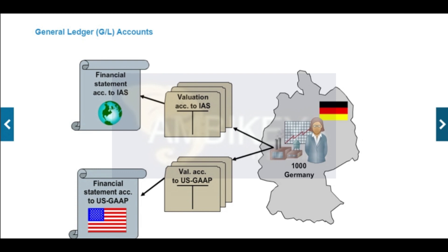The accounts approach is widely used in this context. Different valuation approaches post to different accounts only in cases of differences between the principles for topics like valuation, depreciation, or accruals. When financial statements are created, the financial statement version is used to evaluate the relevant accounts. For example, financial statements according to U.S. GAAP only take into account those accounts that follow this accounting principle.